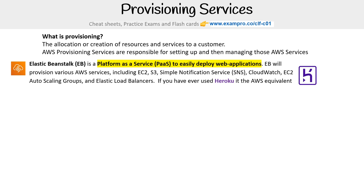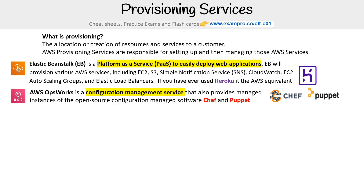The first is Elastic Beanstalk. This is a platform as a service to easily deploy web apps. EB will provision various services like EC2, S3, SNS, CloudWatch, EC2 auto scaling groups, and load balancers. You can think of it as the Heroku equivalent to AWS.